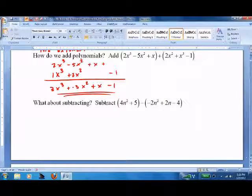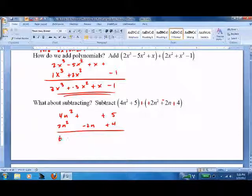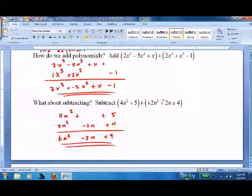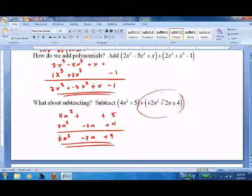Now subtracting is the same thing, except the first thing you do is change everything. We're going to make this a plus and change all three signs. 4n squared plus 5, then 2n squared minus 2n plus 4. Add them down: 6n squared minus 2n plus 9. So with subtraction, I always do this first. A lot of people think they can just subtract. Remember, you will forget - most common mistake made when you add or subtract polynomials.